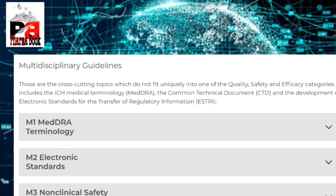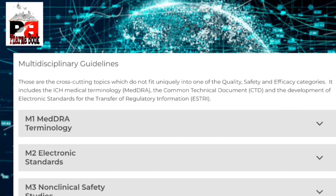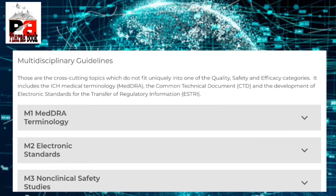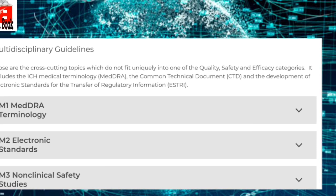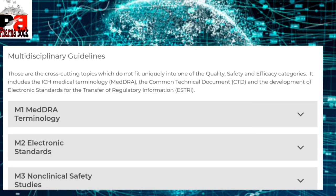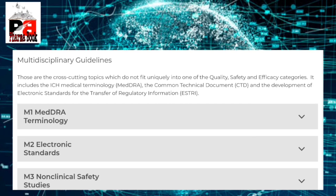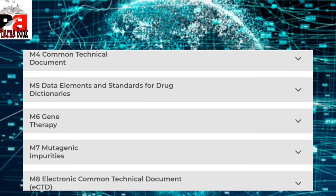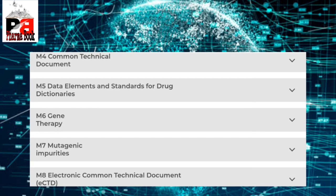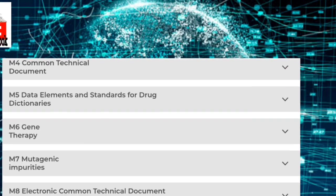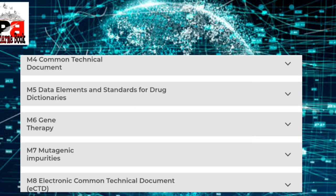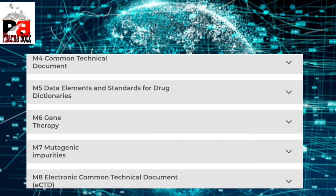Multidisciplinary guidelines are categorized from M1 to M13, where M means Multidisciplinary. M1 MedDRA Terminology, M2 Electronic Standards, M3 Non-clinical Safety Studies, M4 Common Technical Document (CTD), M5 Data Elements and Standards for Drug Dictionaries, M6 Gene Therapy, M7 Mutagenic Impurities, M8 Electronic Common Technical Document (eCTD).